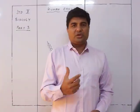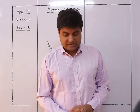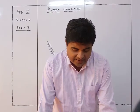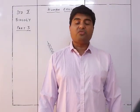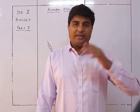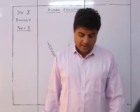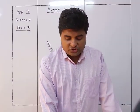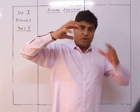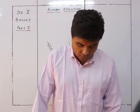Next came Homo erectus. Their body size had increased to about 120 to 150 centimeters — that is 5 to 5.5 feet. The cranial capacity ranged from 800 to 1125 cm³, so the cranial capacity was clearly increasing with each stage.